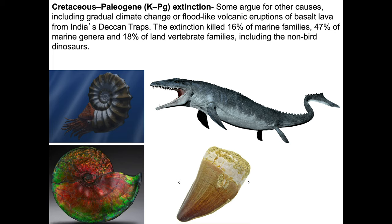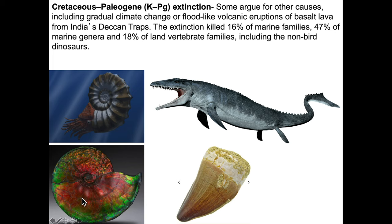A couple of examples: ammonites went extinct. These are creatures that appear similar to what we see today in an animal called the nautilus. The fossils are quite valuable at times. This is a fossil recovered from the Cretaceous Bear Paw Formation in Alberta. It is on sale right now for $280,000 US with free delivery, if you're interested.